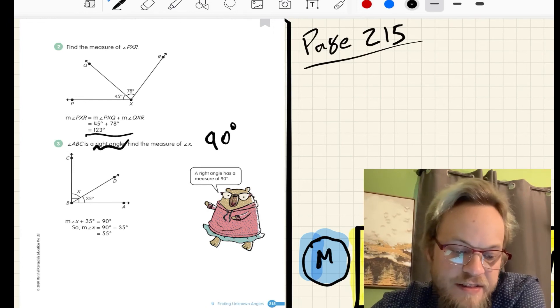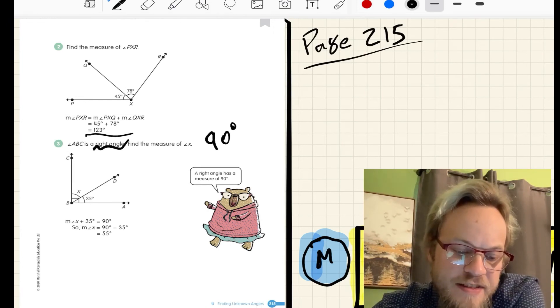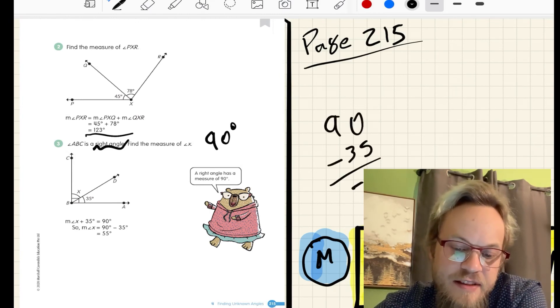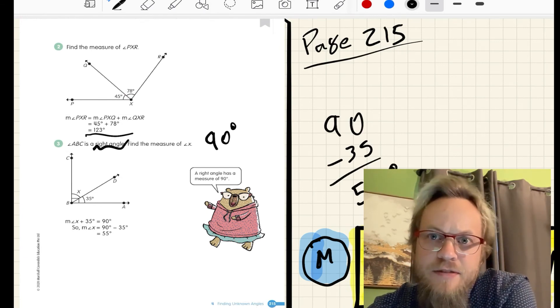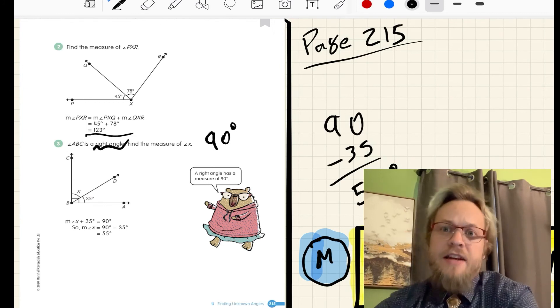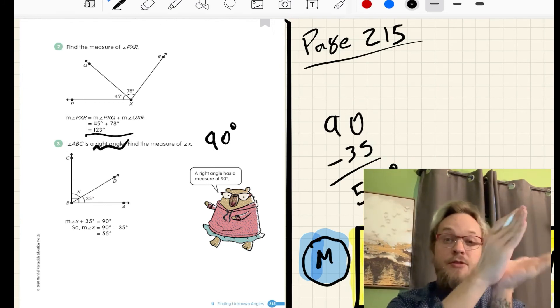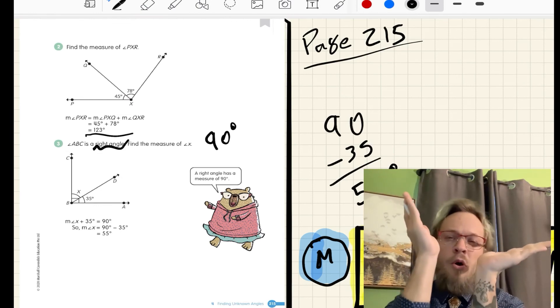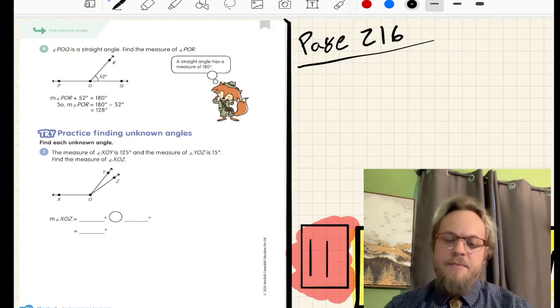We know that DBA is 35 degrees, and we need to figure out what CBD is. If I do 90 minus the 35 that I know, that gives me my angle of 55 degrees. So we can either add if we know two parts to find the whole, or we can subtract if we know the whole and one part.